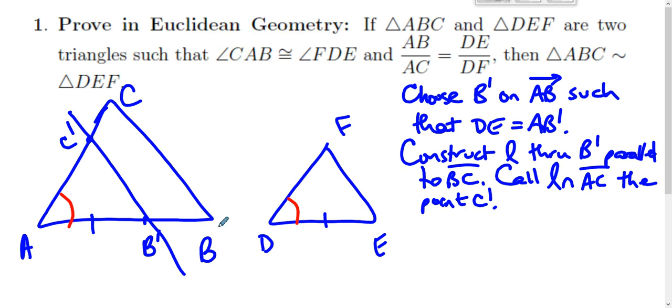So triangle AB prime C prime is similar to triangle ABC by angle-angle.